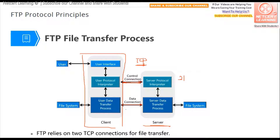The second connection is the data connection, which is used to send data — that is, the files — between the client and the server. When you download or upload a file from the server, it is sent over the data connection.